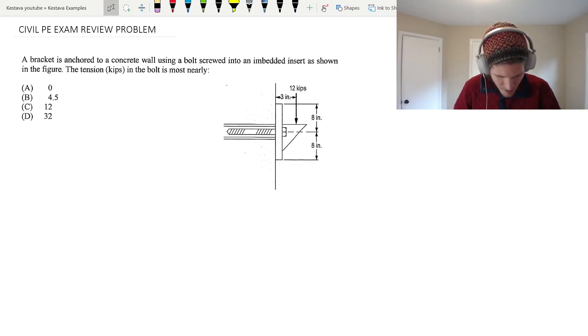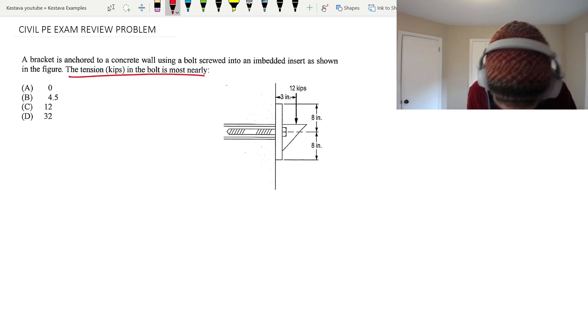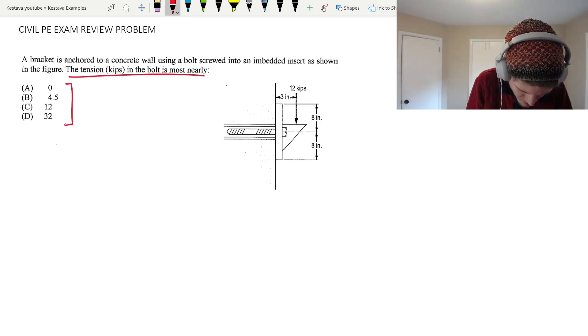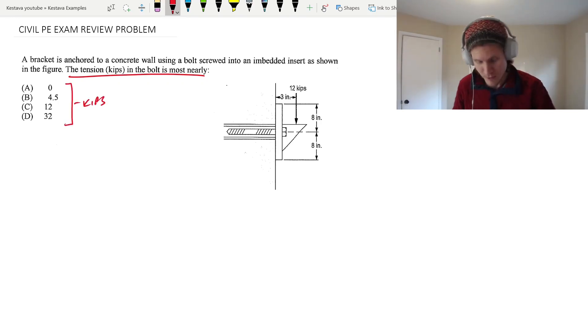Here's our problem for the day. A bracket is anchored to a concrete wall using a bolt screwed into an embedded insert as shown in the figure. The tension in kips in the bolt is most nearly what? So we always underline our problem, right? So we're looking for tension in kips. So everything here, even though units aren't given, is in kips. So we want to make sure that we stick to that when we're doing our problem here.